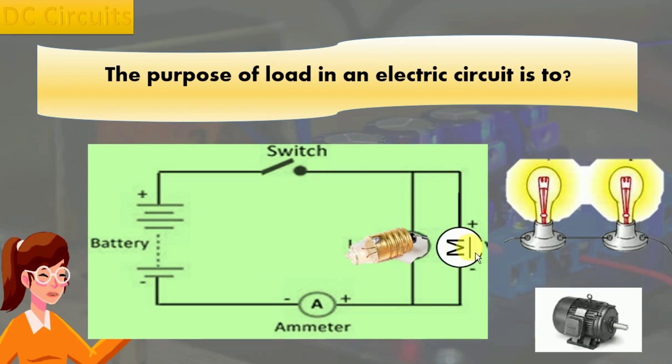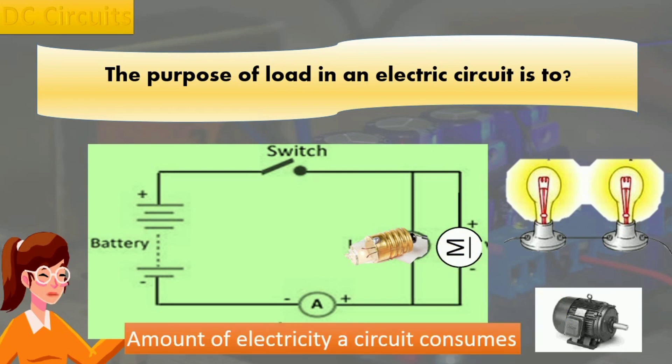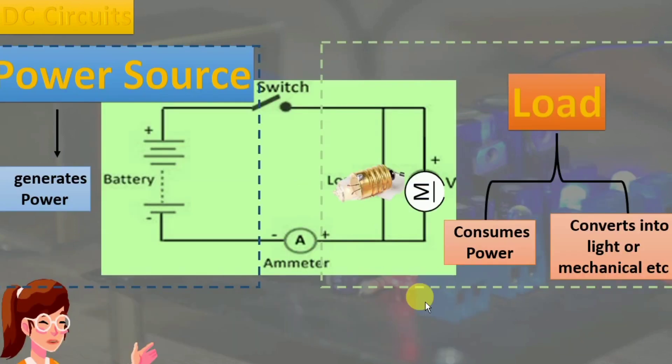The term may also be used to indicate the amount of electricity a circuit consumes. A power source that produces power, such as a battery or generator, is in contrast to this. An electrical load is a part of a circuit that uses electricity.